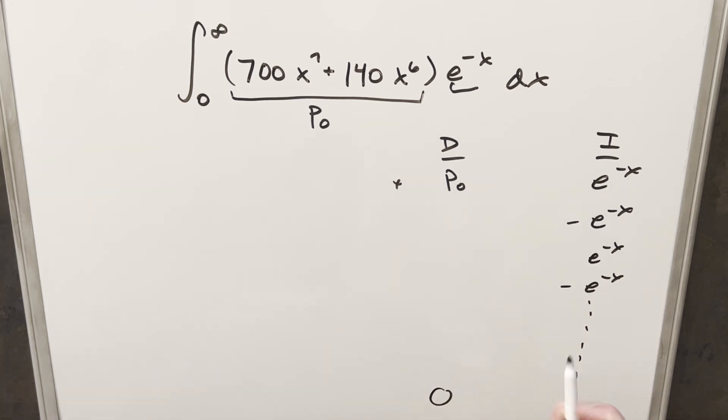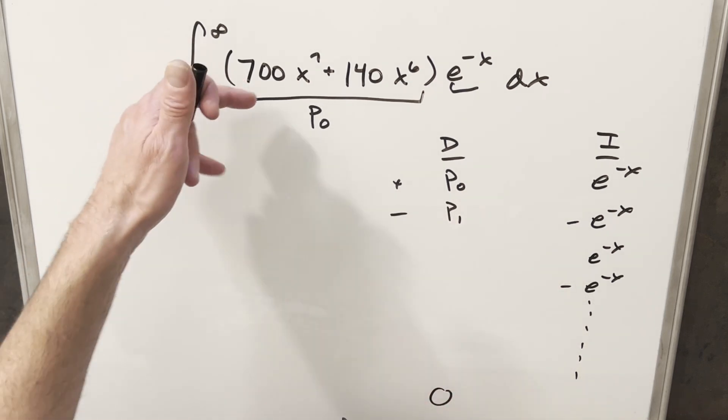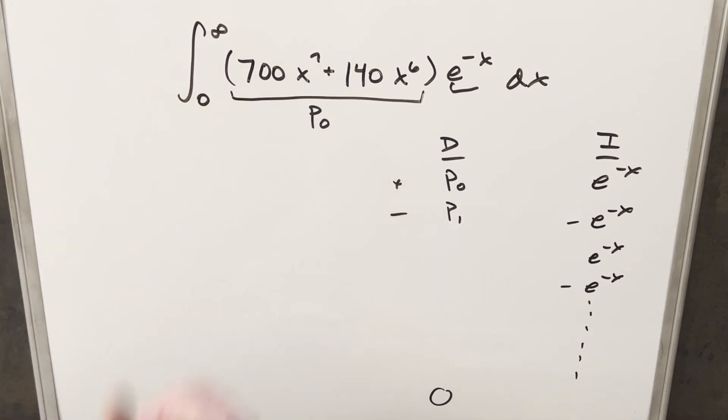Then over here to the left, if we differentiate this, this is going to be alternating signs here. Derivative of P₀, I'm just going to call this P₁ because it's still going to be a polynomial. But this is just going to be the first derivative of this first expression. And we're going to just need to keep going like this with alternating signs, differentiating this all the way down until we eventually differentiate to 0.